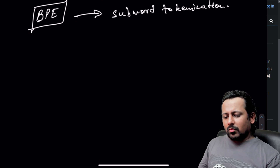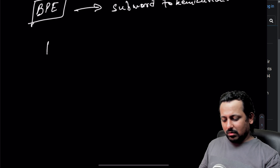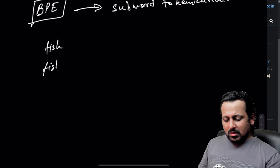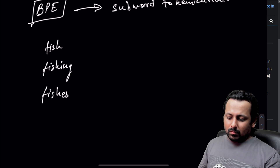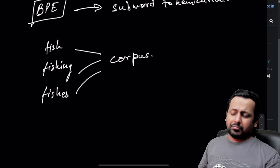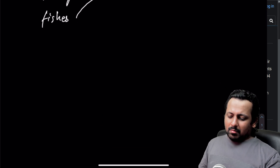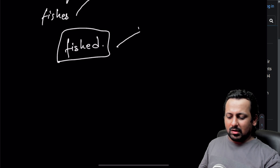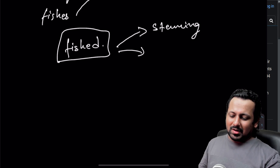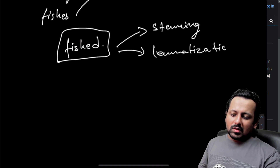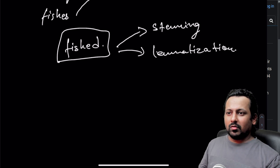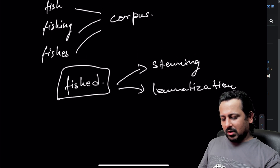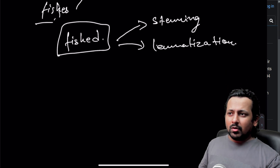Why is BPE useful and why do we need it? Let's say you have three words in the corpus: fish, fishing, and fishes. This is your corpus — your dataset. Now you come across a new word: 'fished'. You can use stemming or lemmatization, and if you use these techniques on the training data all three variations will reduce to 'fish'. But stemming and lemmatization don't always work.